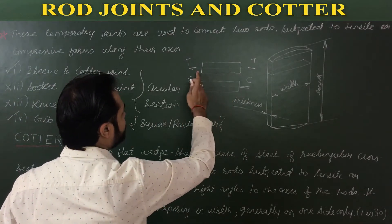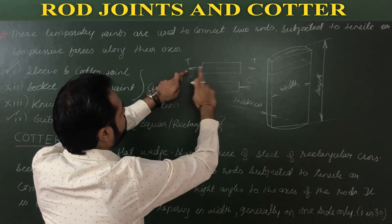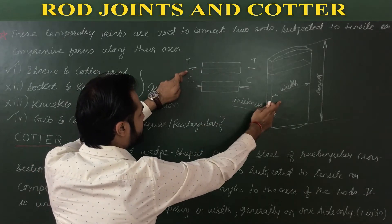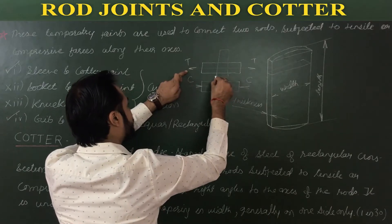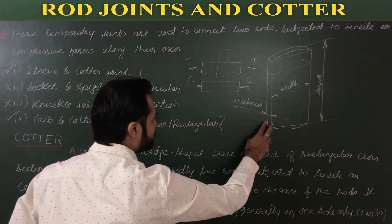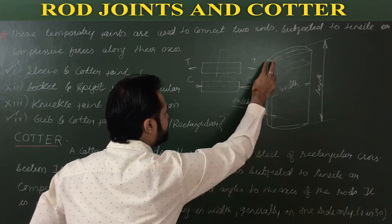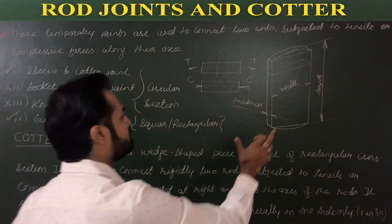Right angle to the axis of the rod means if this line is the axis of the rod, then we have to insert the cotter perpendicular to the axis of the rod. It is uniform in thickness but tapering in width — meaning the thickness of the cotter is constant throughout.